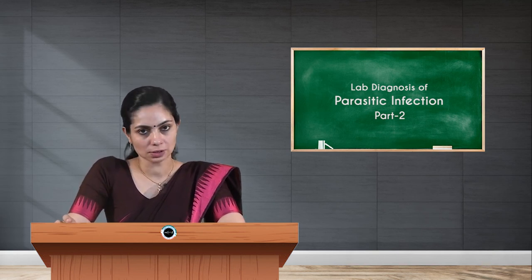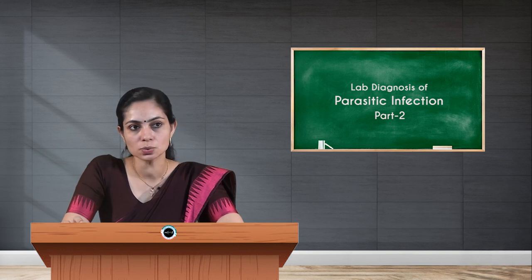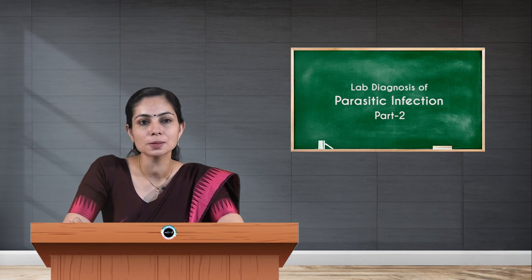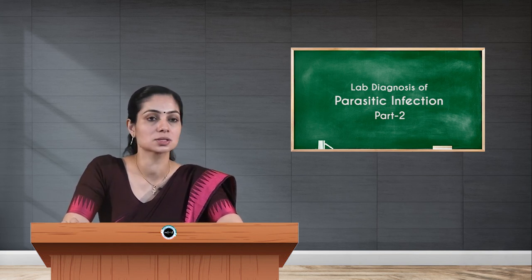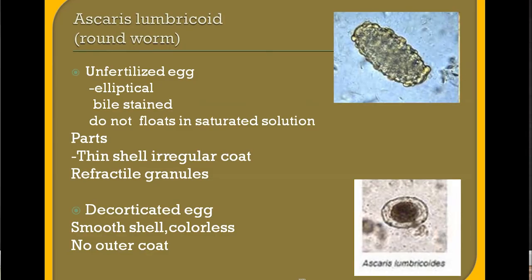The unfertilized Ascaris egg can also be detected in stool, but cannot be used with flotation technique as it will not float in saturated solution. The unfertilized egg is more elliptical in shape compared to the fertilized egg, and is also bile-stained. Its parts include a thin shell, irregular coat, and refractile granules. Both fertilized and unfertilized eggs can also appear in a decorticated form — with a smooth colorless shell and no outer coat.